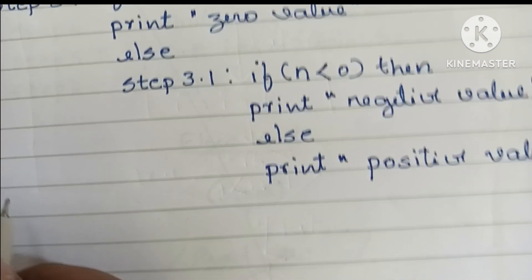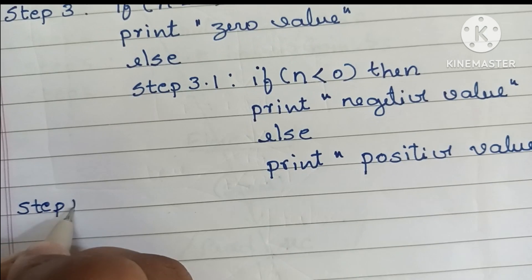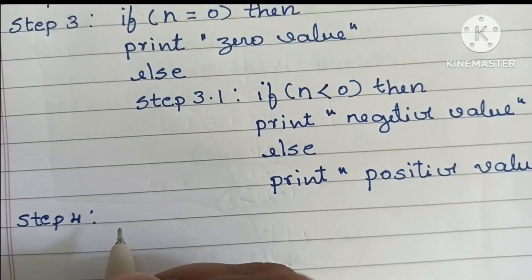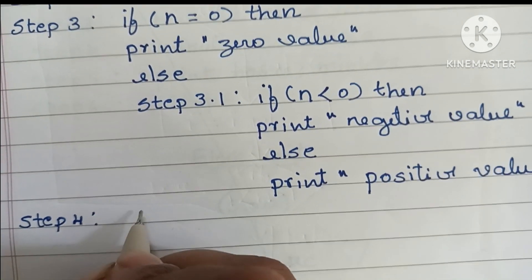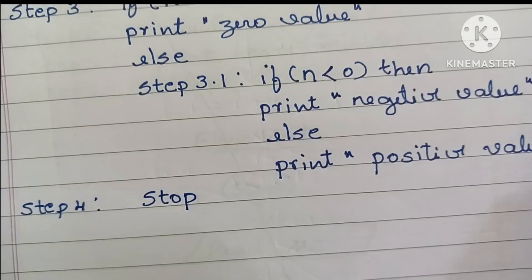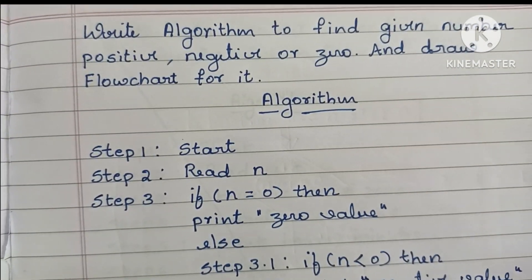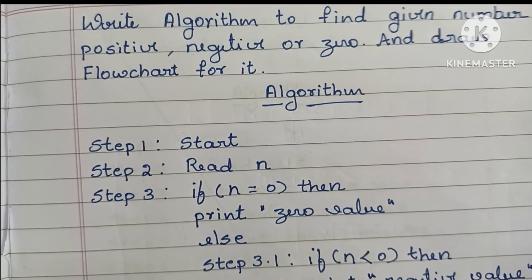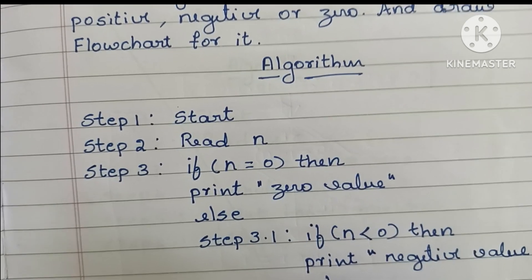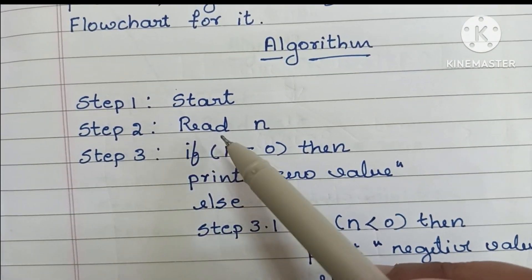Step four: we have to stop the algorithm using the stop statement. This is the algorithm to find whether the given number is positive, negative, or zero. It starts with the start statement.